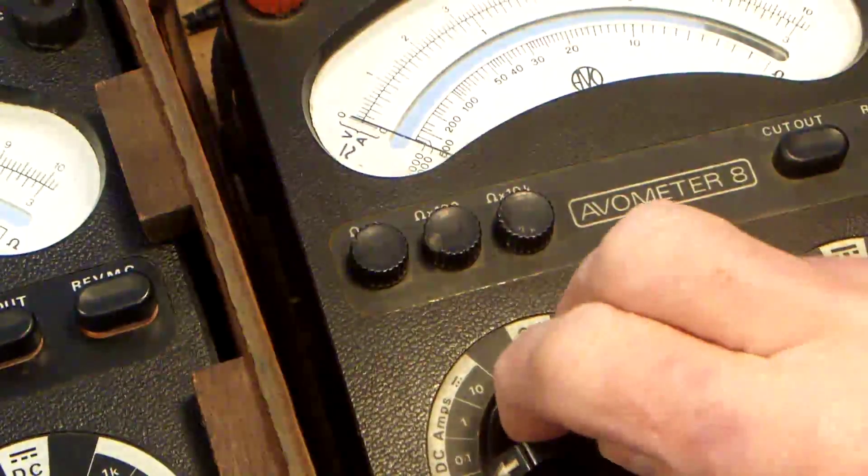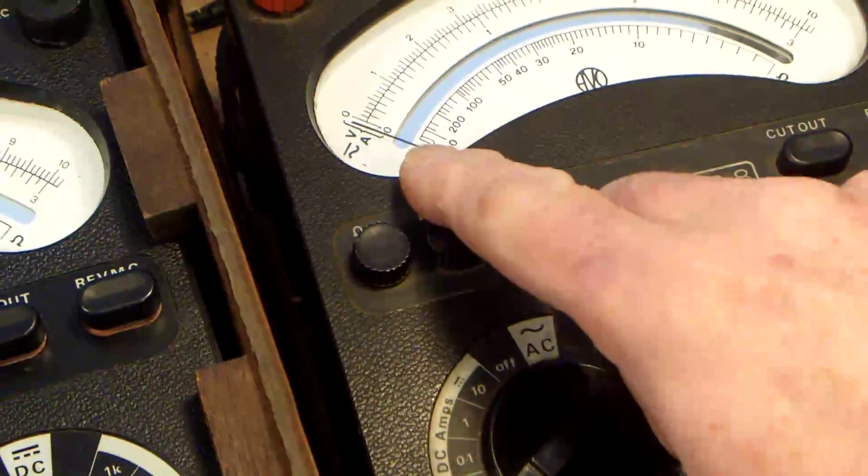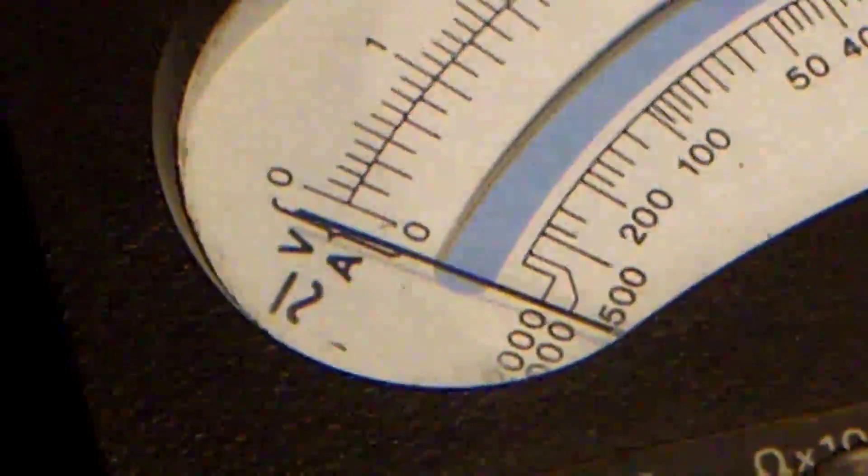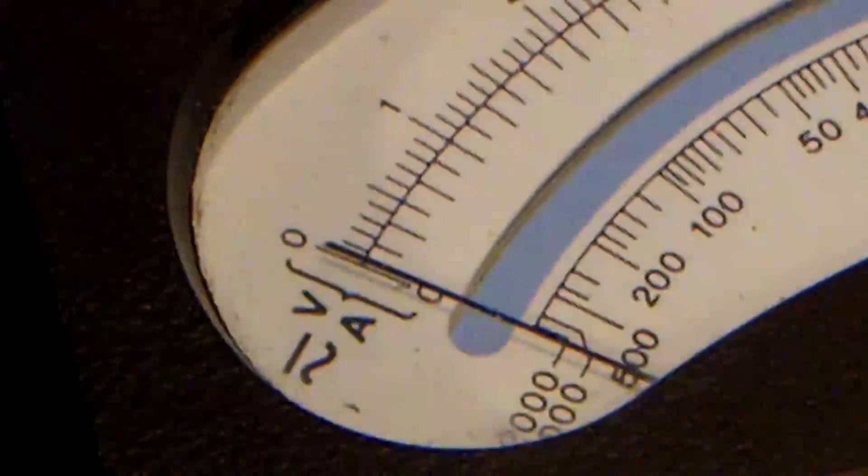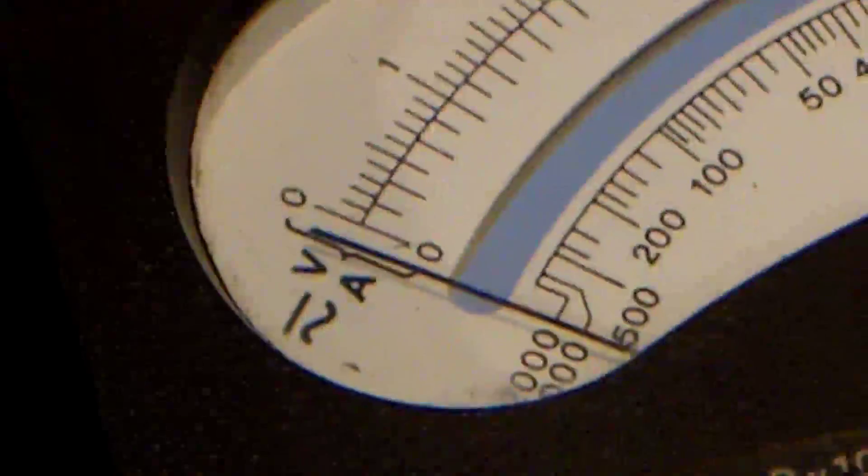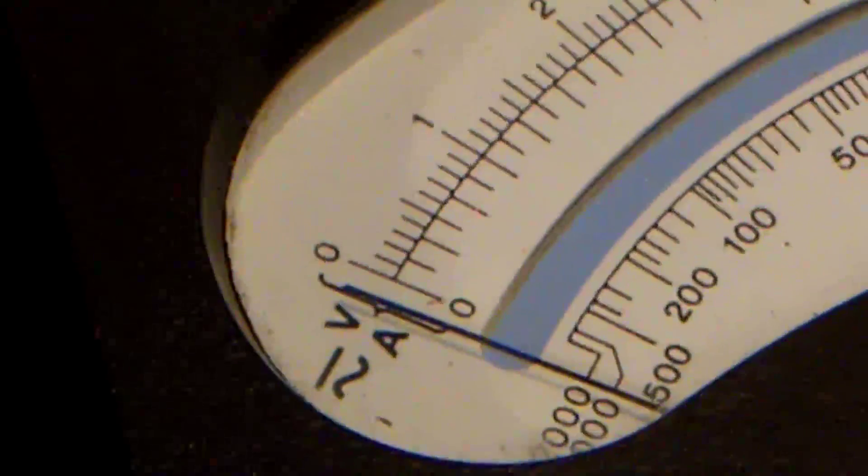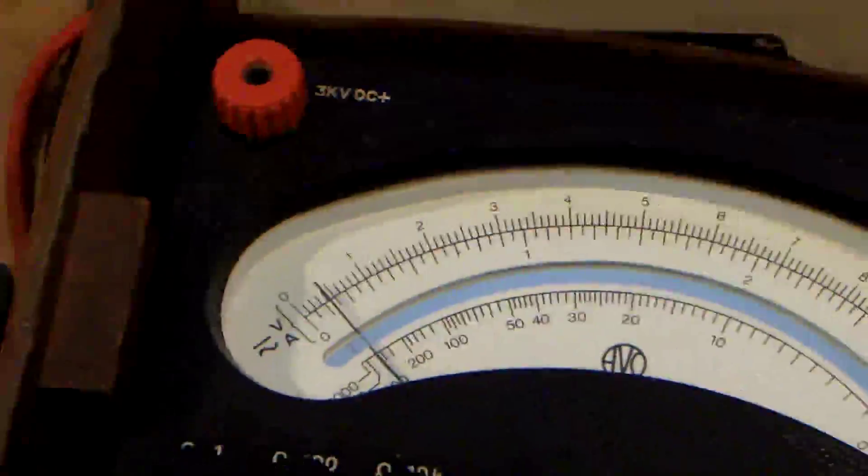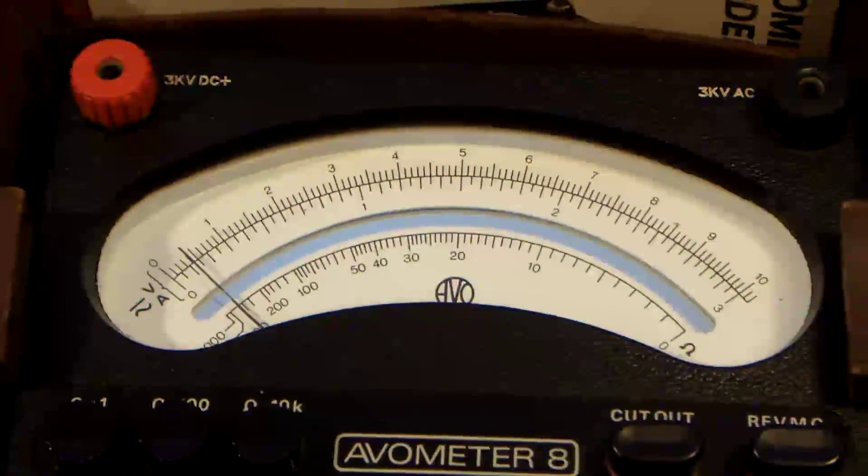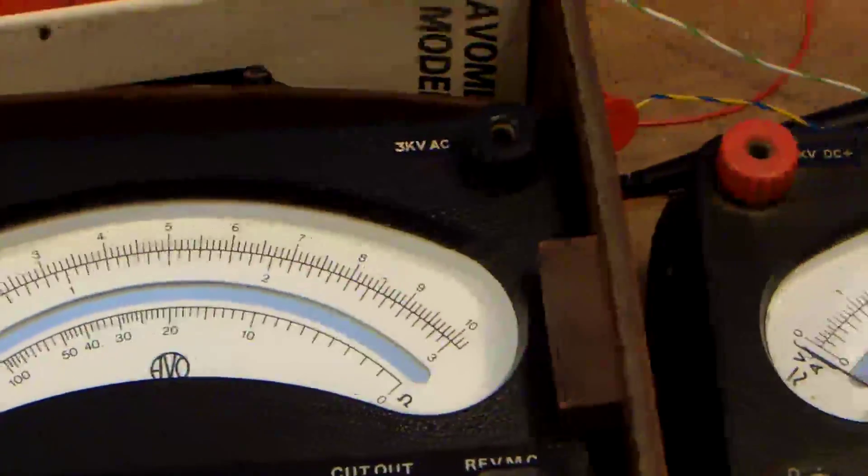And as I go to 1 milliamp, you see the meter, it's reverse direction. So that's on the 10 milliamp range, and that's on the 1 milliamp range. So this cell is still driving the power supply. The voltage is the right way around, the meter is coupled up correctly.